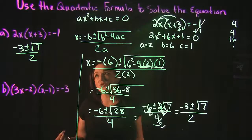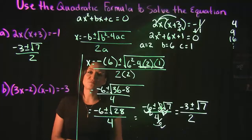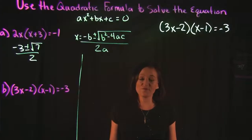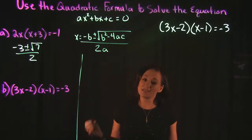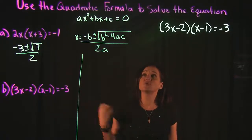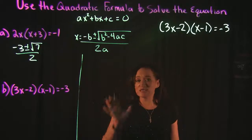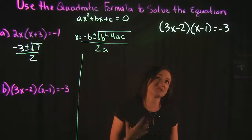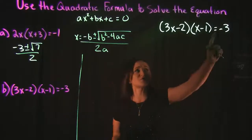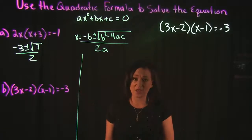So we have two solutions: negative 3 plus the square root of 7 over 2, and negative 3 minus the square root of 7 over 2. Let's move on to the next example. For example B, we have 3x minus 2 times x minus 1 is equal to negative 3. When using the quadratic formula, first things first — we need to make sure our equation is in proper quadratic form.